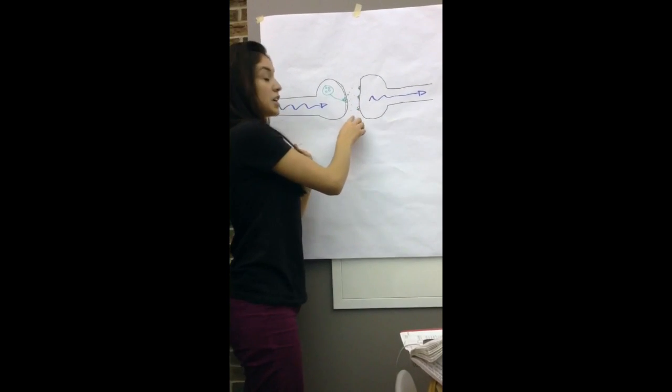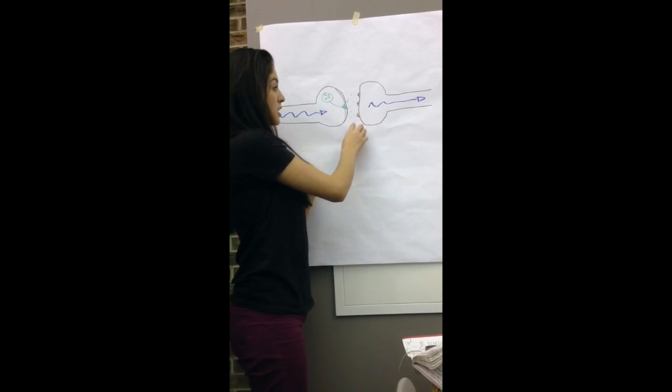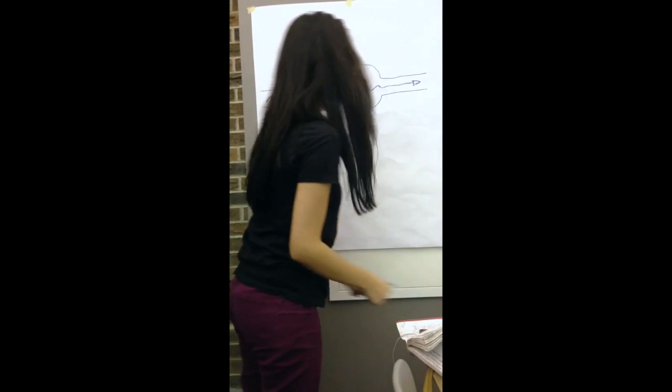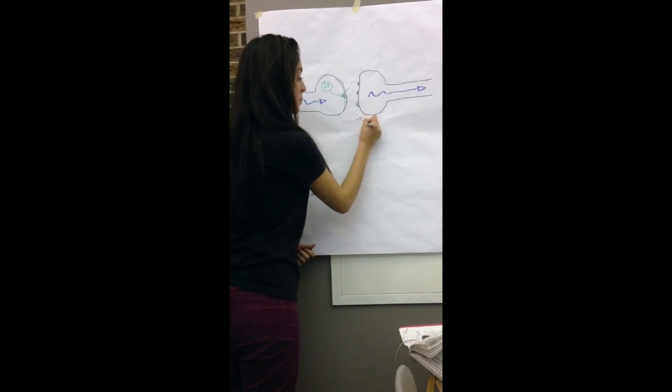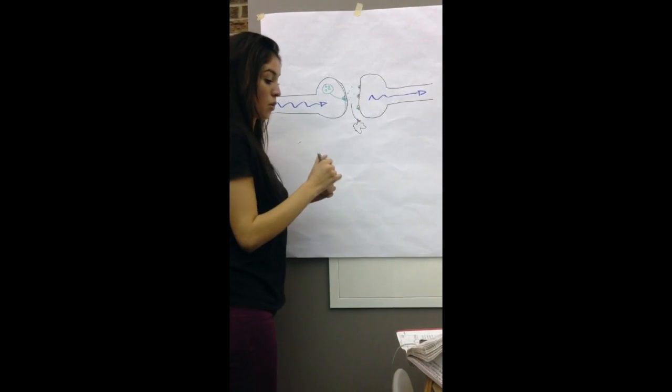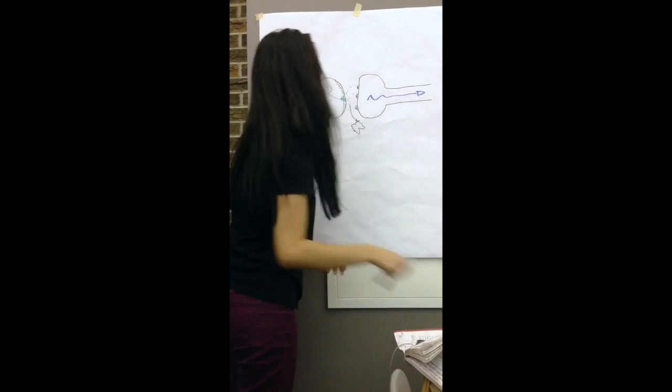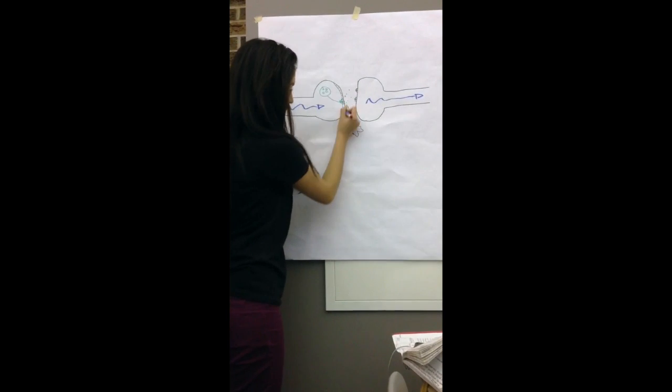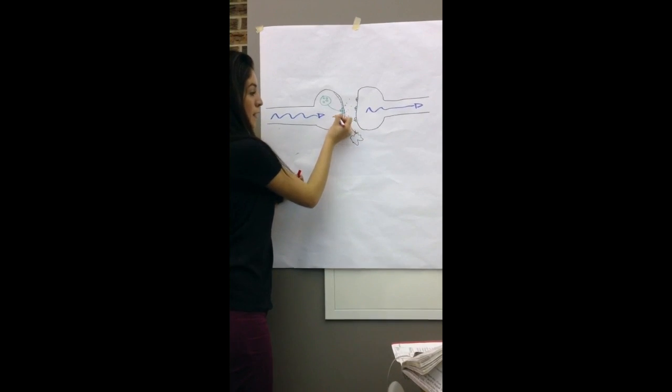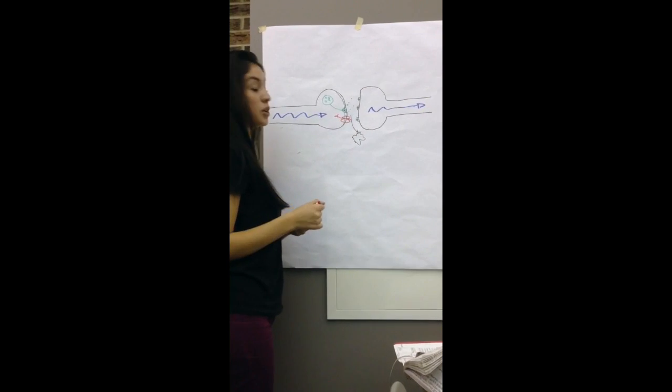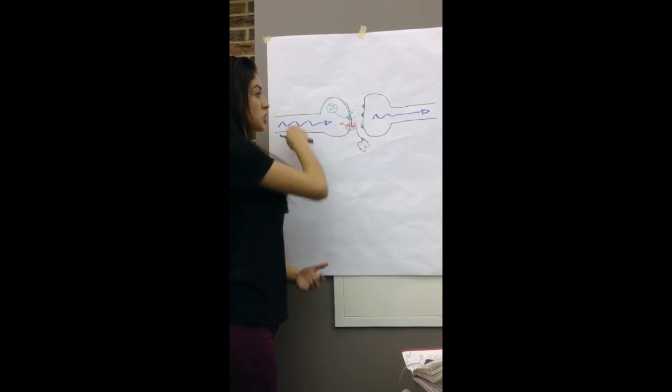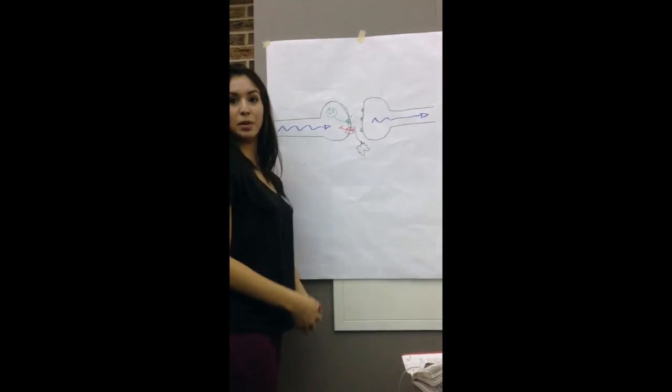Any neurotransmitters that are left in the pre- and post-synaptic space, which is also known as the synapse, are either degraded by an enzyme or taken back in through transporter channels, back into the pre-synaptic knob, to be recycled and reused when an action potential goes through the pre-synaptic knob again.